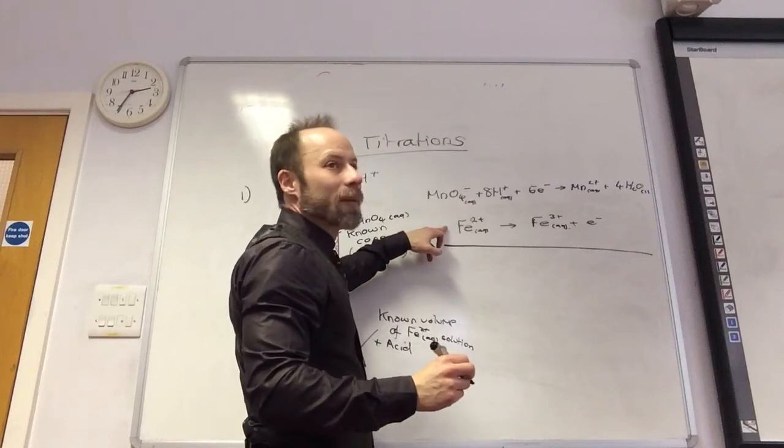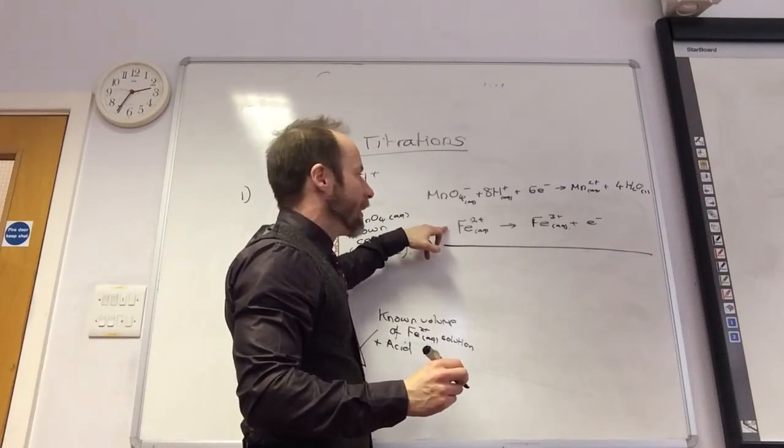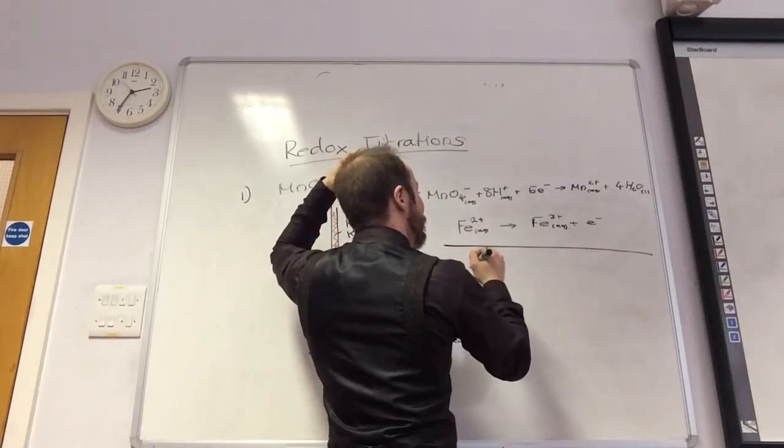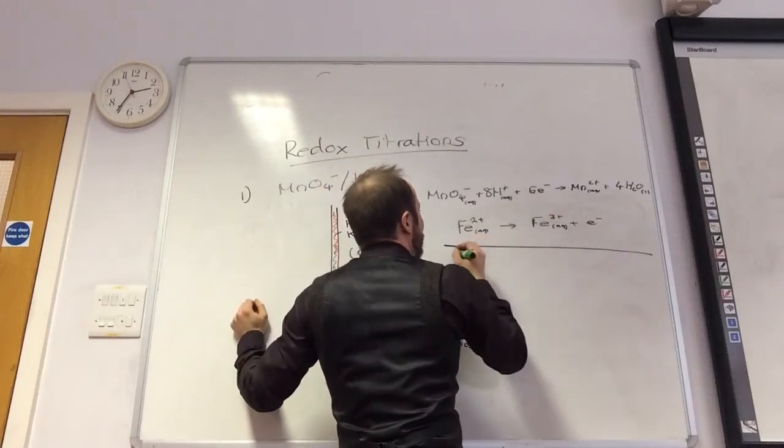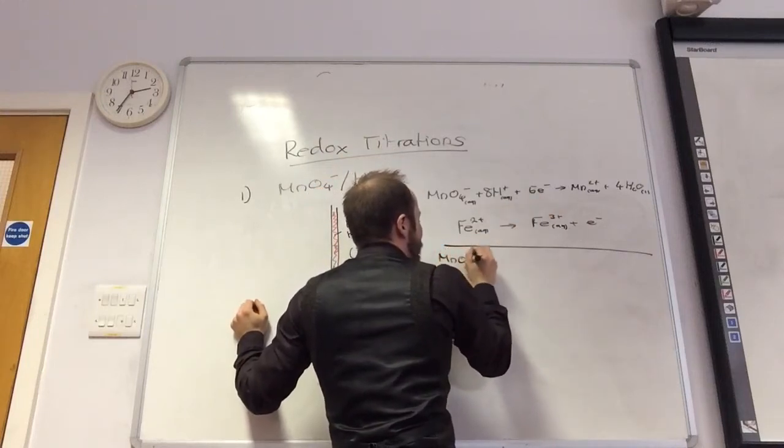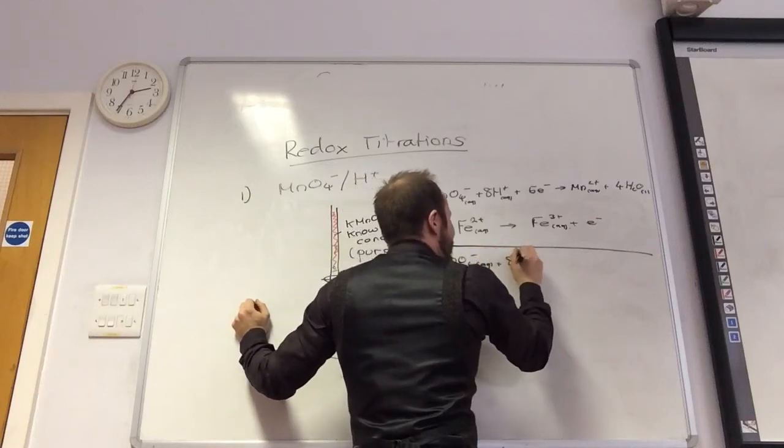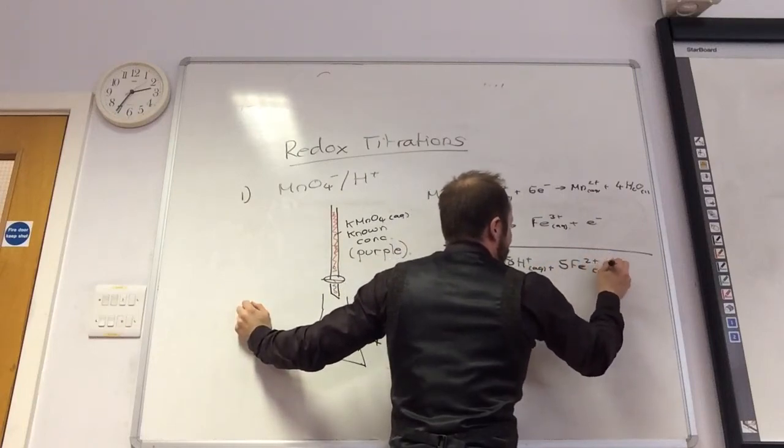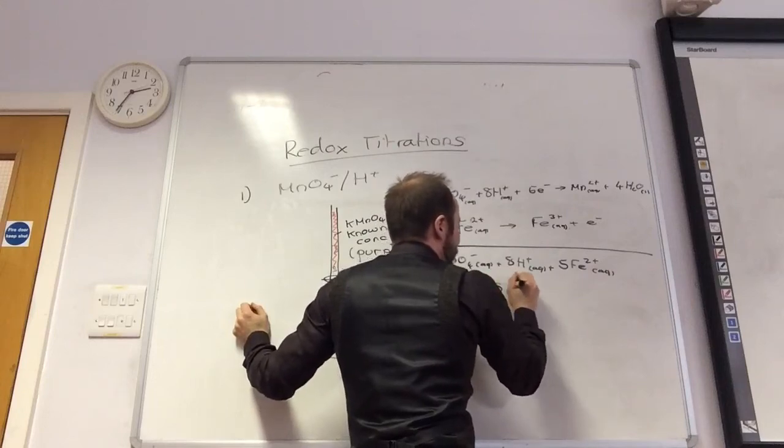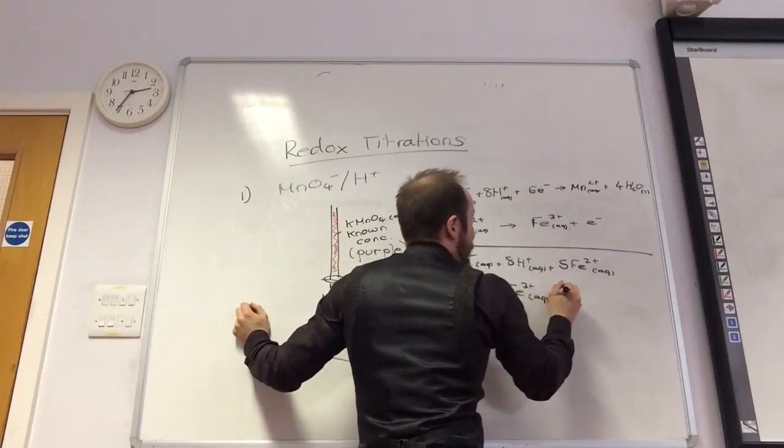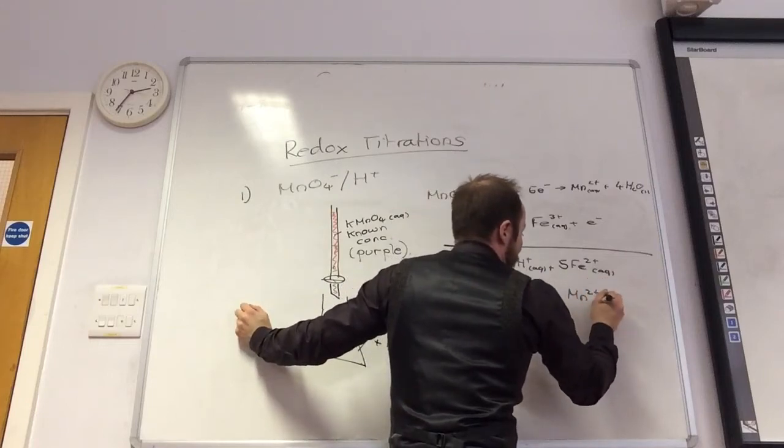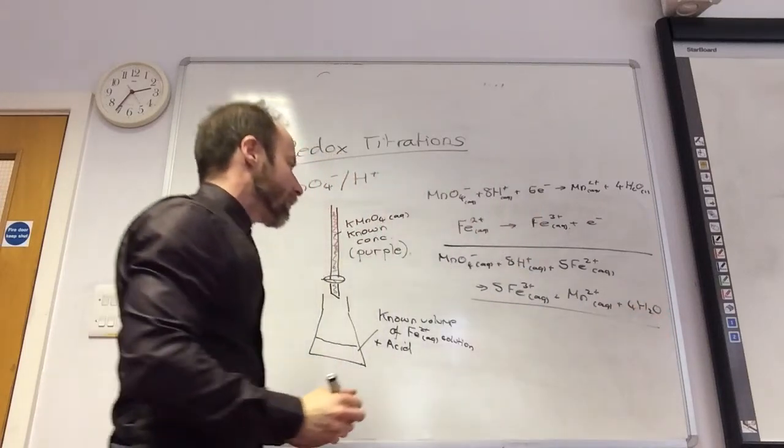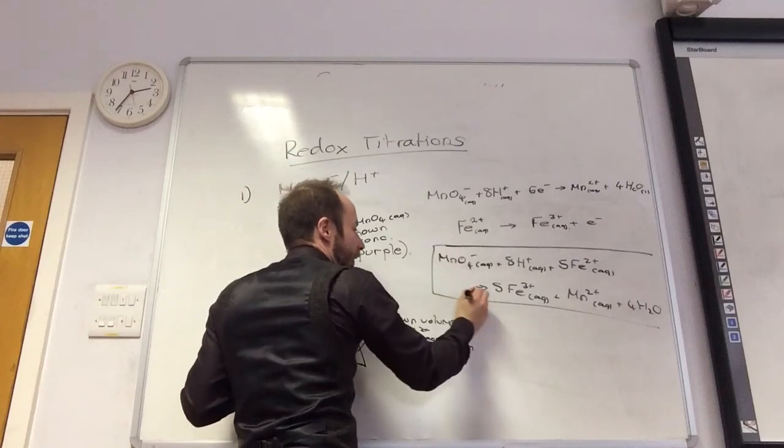So we can do the overall equation. I've got to times this one by 5 because I've only got one electron there. So 5Fe2 plus aqueous plus MnO4 minus goes to 5Fe3 plus aqueous.